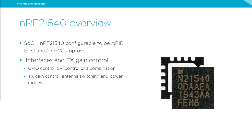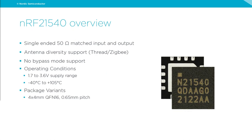The device has single-ended inputs and outputs, 50-ohm matched. One feature used heavily in home automation is antenna diversity support — on the output side we have two antenna ports you can switch between. For Thread and Zigbee we can pick the antenna with the best signal. For Bluetooth you can also switch, but the difference has to do with the packet structure — Bluetooth has a very short preamble while Thread and Zigbee have long preambles, allowing us to measure signal strength during the preamble to decide which antenna is best.